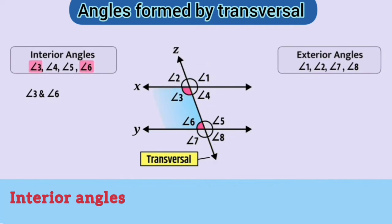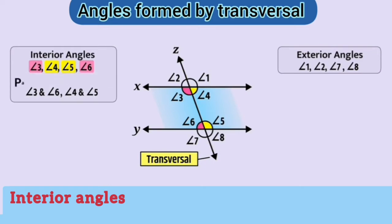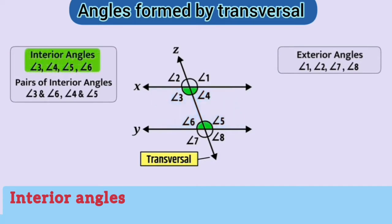Similarly, angle 4 and angle 5 are also interior angles on the same side of the transversal. So we say that these are a pair of interior angles on the same side of the transversal.